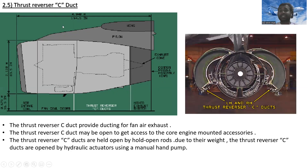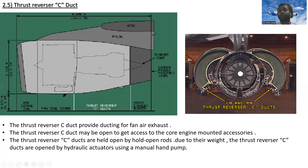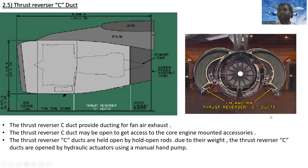The thrust reverser C-ducts — left and right — provide ducting for fan air exhaust. The thrust reverser C-ducts may be opened to gain access to the core engine-mounted accessories. The C-ducts are held open by hold-open rods. Due to their weight, the thrust reverser C-ducts are opened using hydraulic actuators operated by a manual hand pump.